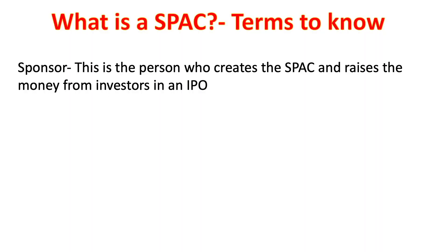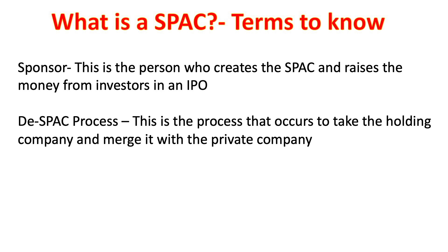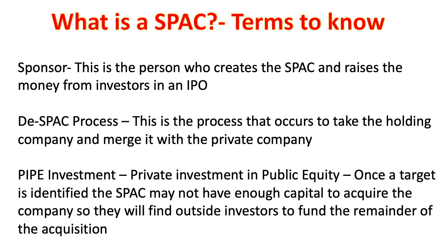Now let's talk about some of the most important terms involved in SPACs. First, the sponsor — the person who creates the SPAC and raises money from the investors for the IPO. The second term is the de-SPAC process: the process that occurs for the SPAC to merge with the private company. The last term you should know is a PIPE investment, or private investment in public equity. Sometimes once the sponsor identifies the target they want to acquire, they don't have enough money just from the IPO, so they'll sell more shares to outside investors to raise the capital necessary to finish the acquisition.